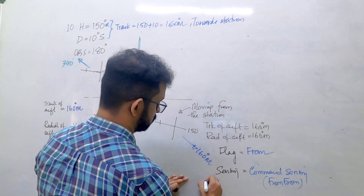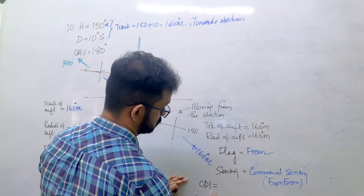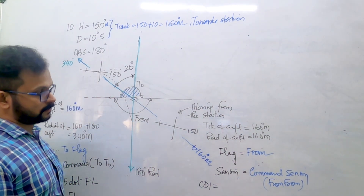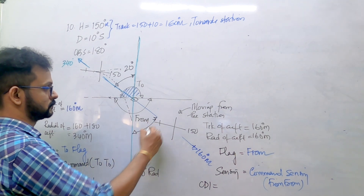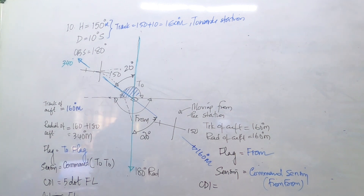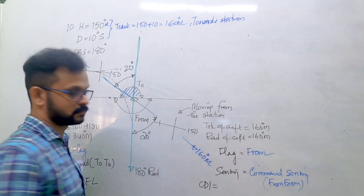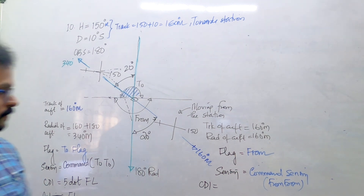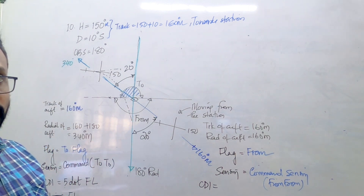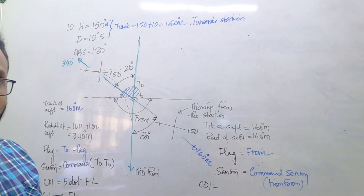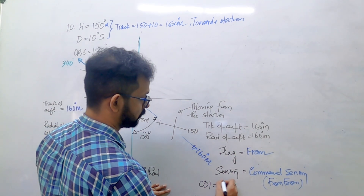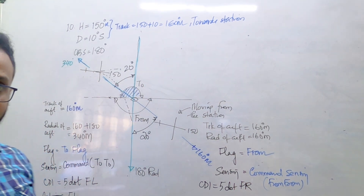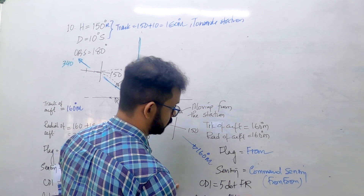For the other case - CDI indication and action required: we are from the station and going away from the station, so it is command sensing. Desired radial is 180 and present radial is 160. So it will be a full five-dot deflection to the right - fly right indication. We are supposed to fly right.